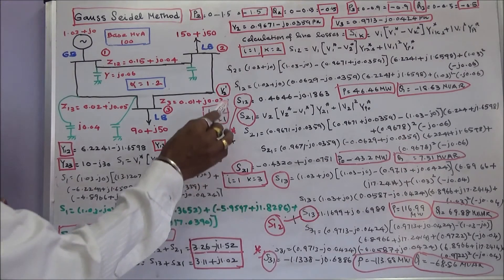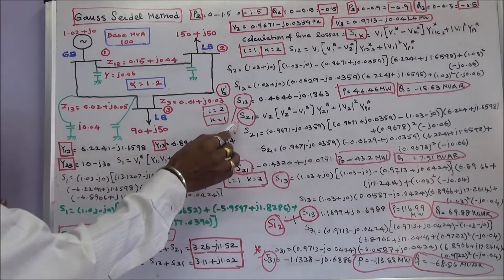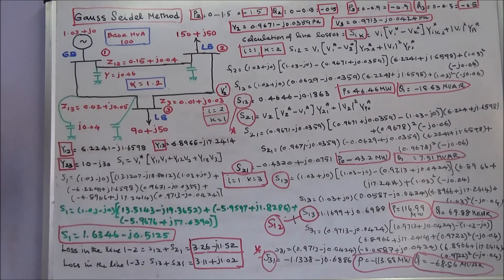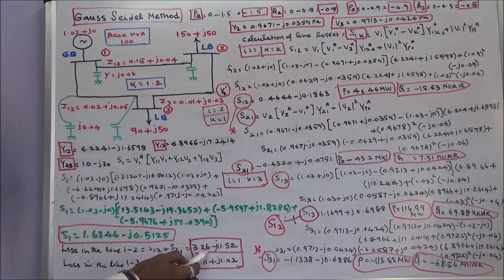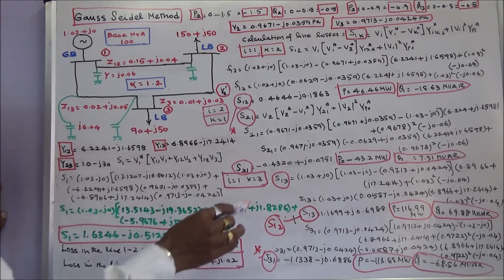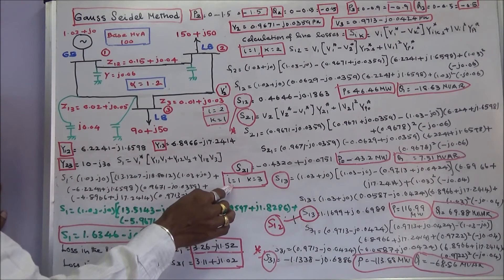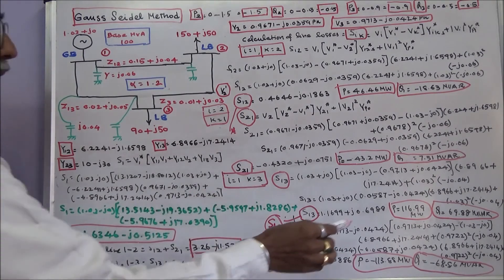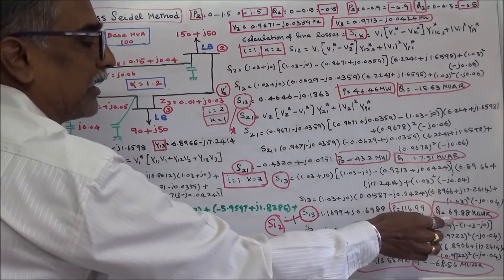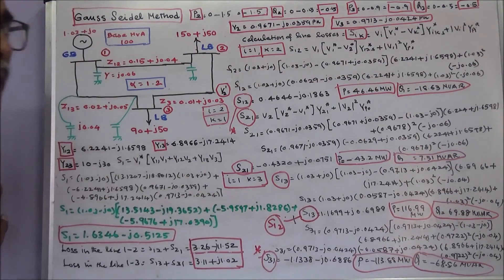From S12 and S21, the line loss in line 1-2 is S12 + S21: real power loss = 3.26 MW, reactive power loss = minus 11.52 MVAR. For S13 (I=1, K=3): P = 116.99 MW, Q = 69.88 MVAR.